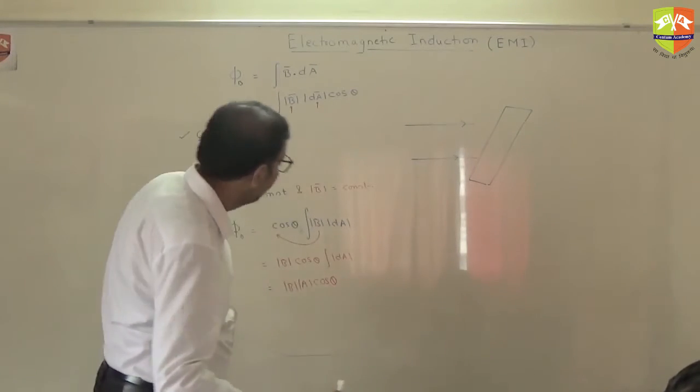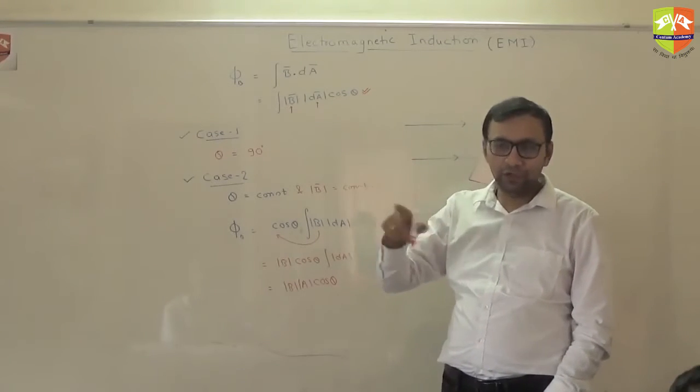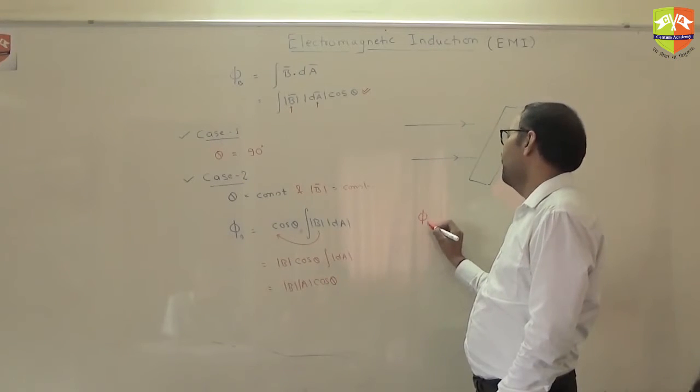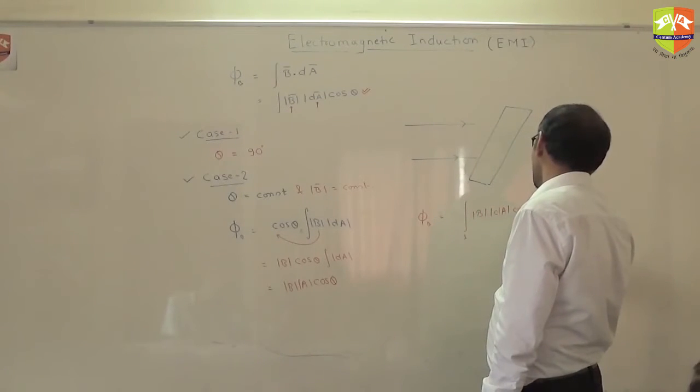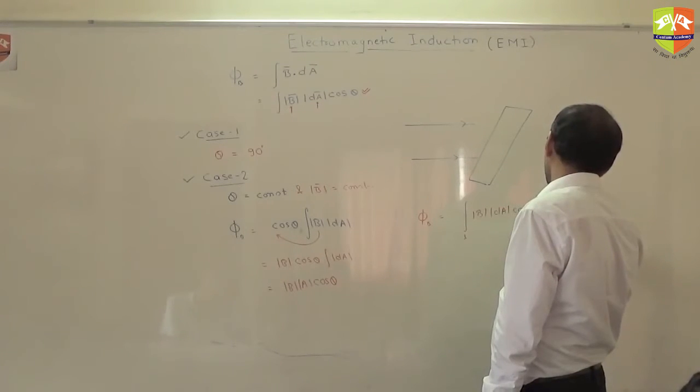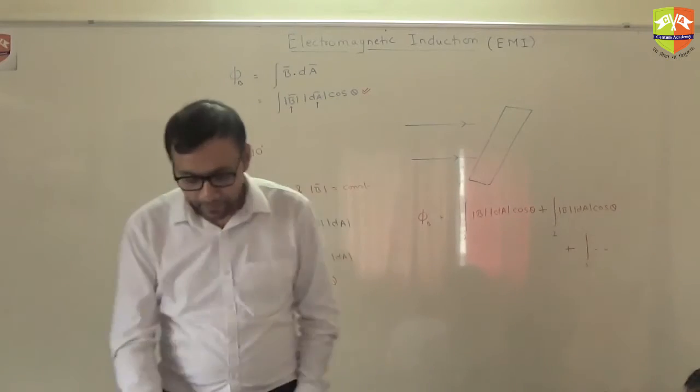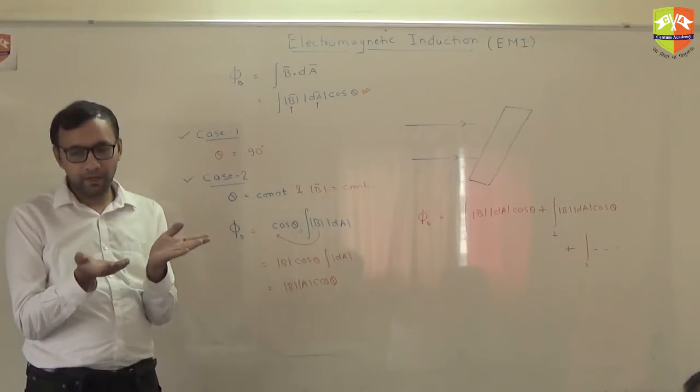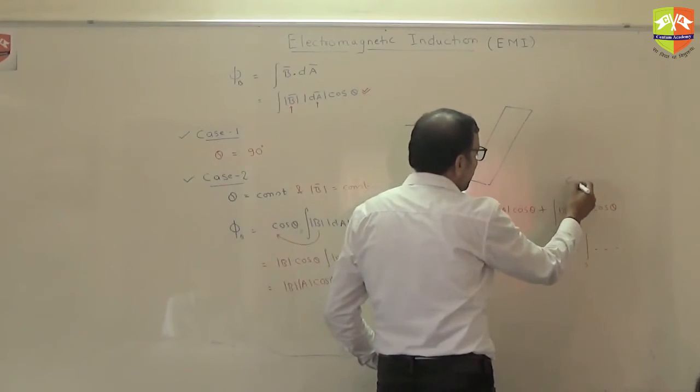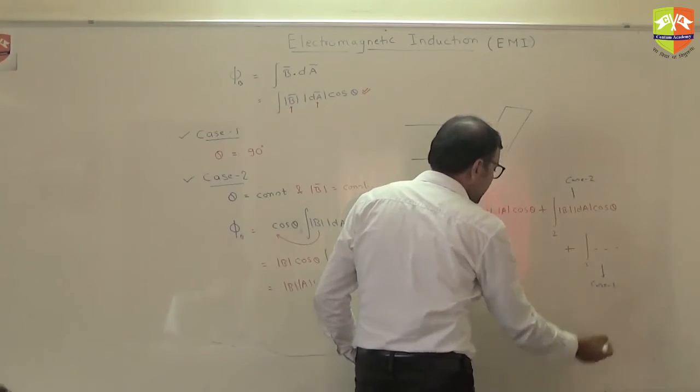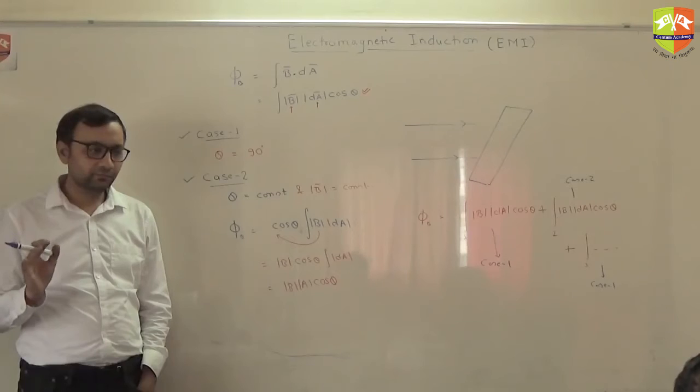Fine. So we will be always on a lookout of case number 1 and case number 2. In fact, since I am calculating this entire flux, this flux I am calculating for the complete loop I can split this integral into two parts. B into dA into cos θ plus integral in part number 2, B into dA into cos θ and so on. You can split the integral into multiple parts. Like you can divide the entire loop into multiple parts and you can integrate separately and if you integrate separately, this integral could be case number 1, this could be case number 2, this could be again case number 1. So like that you can split the integral. Entire integral need not be a single case.